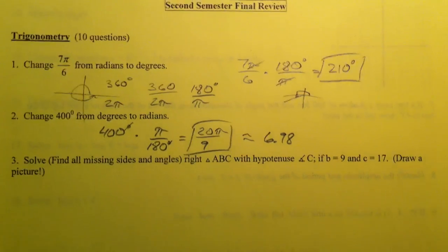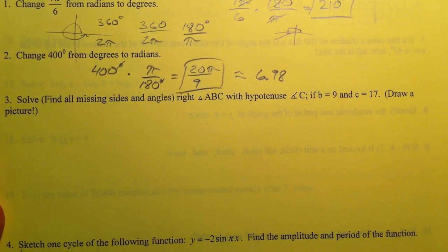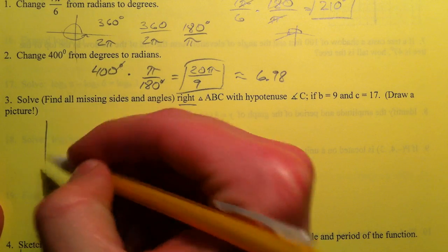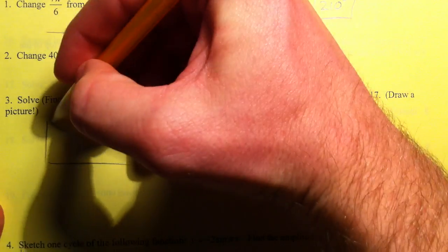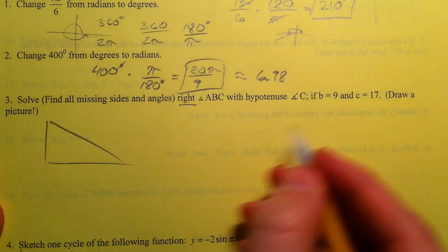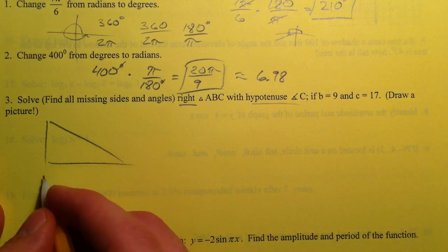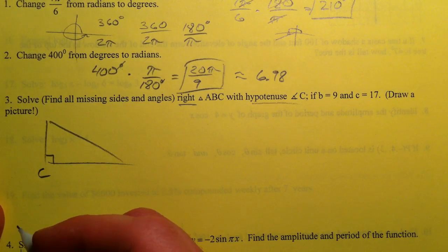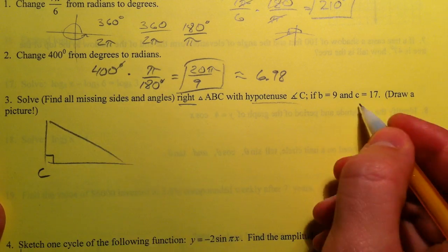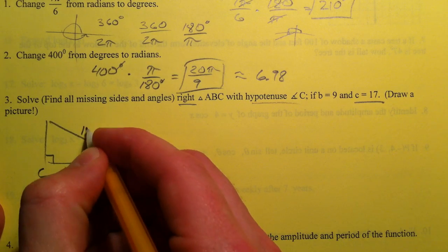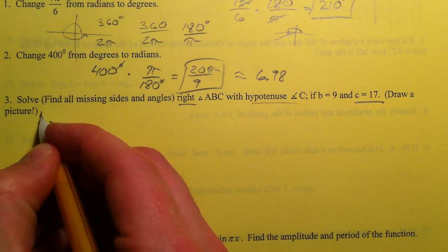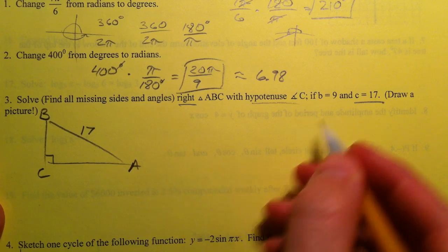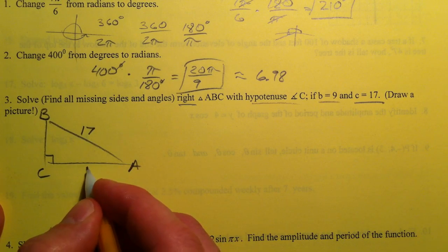Alright, solving a triangle. It's a right triangle, and so I'm going to draw it. And I don't take much time except that it says hypotenuse angle is C, so I'm going to put the right angle is C. And so C=17 is across from that. And then it doesn't matter. I'm going to put B and A, and so then B equals 9 is right here.